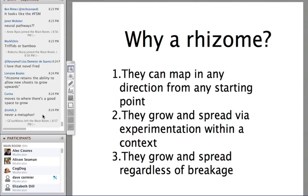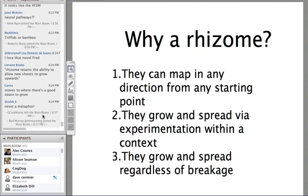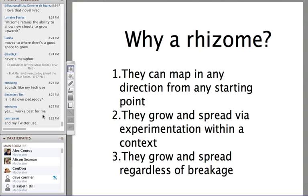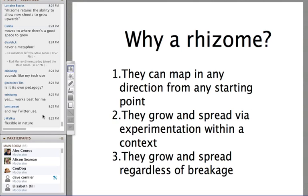In 1980, two French philosophers — Gilles Deleuze and Félix Guattari — wrote a book called 'A Thousand Plateaus.' They talked about the idea of the rhizome and how its nature can be a useful way — let's say metaphor — for how we can think about things. One key quality: rhizomes can map in any direction from any starting point — there's no preset way a rhizome is going to go; it follows its environment. It's unpredictable and responsive — it can move, grow, and spread via experimentation within a context. They also don't need to be predefined, they don't need a single path. No matter how you break them, they keep on growing — it's not a set linear narrative path.